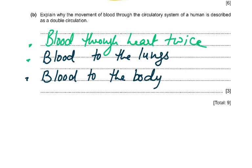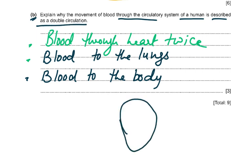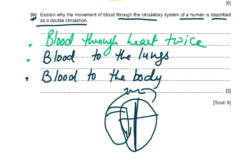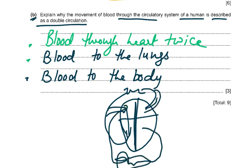Part B: explain why the movement of blood through the human circulatory system is described as a double circulation. Blood passes through the heart twice because we have a four-chambered heart. First blood goes to the lungs and back to the heart, then out to the body and back again — blood to the lungs and blood to the body. That is a double circulation, worth three marks.